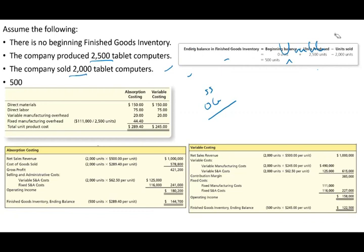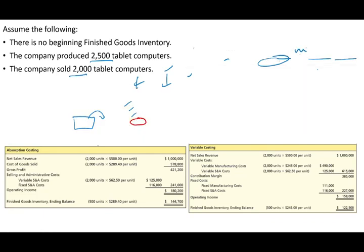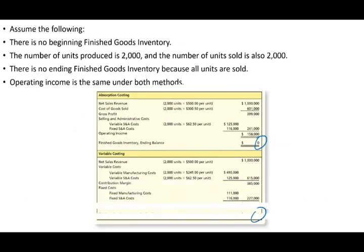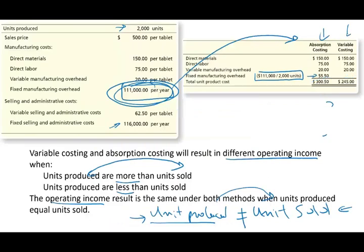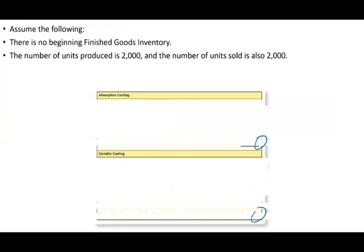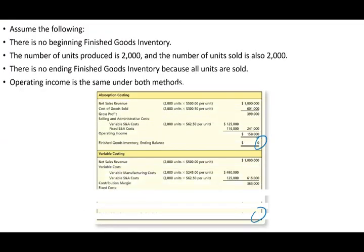With 500 in ending inventory: we started with zero, produced 2,500, sold 2,000. The fixed manufacturing overhead per unit is now $111,000 ÷ 2,500 = $44.40, down from $55.50 when only 2,000 units were produced. As you produce more units, the fixed manufacturing overhead per unit goes down — the same electricity cost is spread over more units.